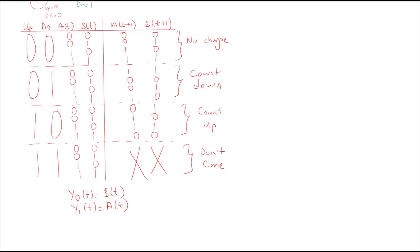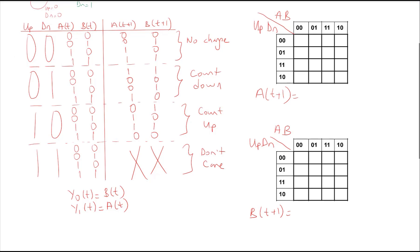Here are two Karnaugh maps for AT+1 and BT+1. Let's fill out the Karnaugh map for AT+1. If up is 0 and down is 0, I have a 1 here and another 1 here. If up is 0 and down is 1, I have a 1 here and a 1 here. If up is 1 and down is 0, I have a 1 here and another 1 here.